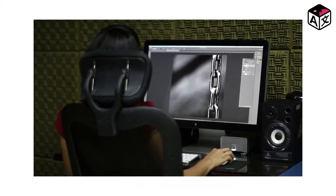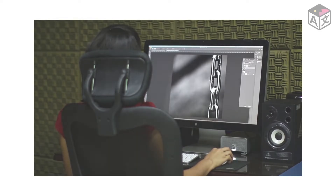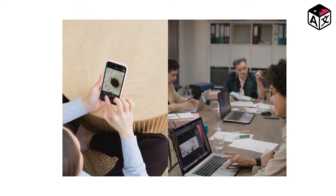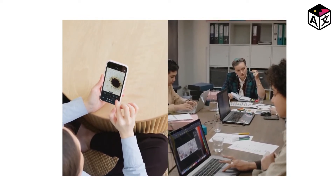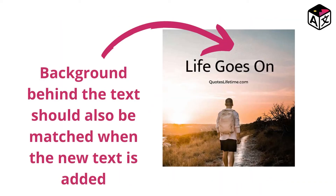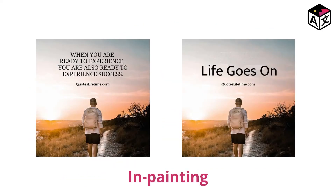There are certain ways where you can edit the text in the image using Photoshop or any similar high-end photo editing software, but the process of editing text in Photoshop is complex and not really easy to understand for beginners. It's not just simply editing the text part and entering your desired text, but there also comes a part where the background behind the text should also match — this is called inpainting.